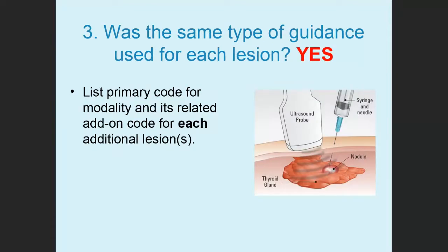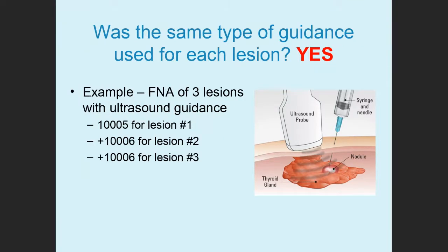The next question is: was the same type of guidance used for each lesion? If there are multiple lesions and the same type of guidance was used, you list the primary code for the modality and its related add-on code for each additional lesion. For example, fine needle aspiration of three lesions with ultrasound guidance: use 10005 for lesion one, 10006 for lesion two, and 10006 again for lesion three — all using the same type of guidance.